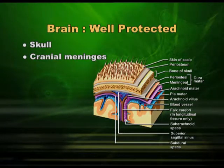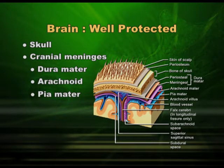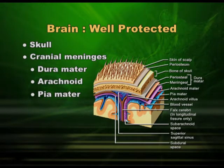These meninges are named dura mater, arachnoid, and pia mater. Dura mater is the first meninges present just after the skull, and pia mater is the membrane present just outside the brain tissue. Between the two is a thin membrane called the arachnoid. A fluid is filled between these membranes, supplying a cushion to the brain tissue, and that is why our brain tissue, though very soft, is well protected.